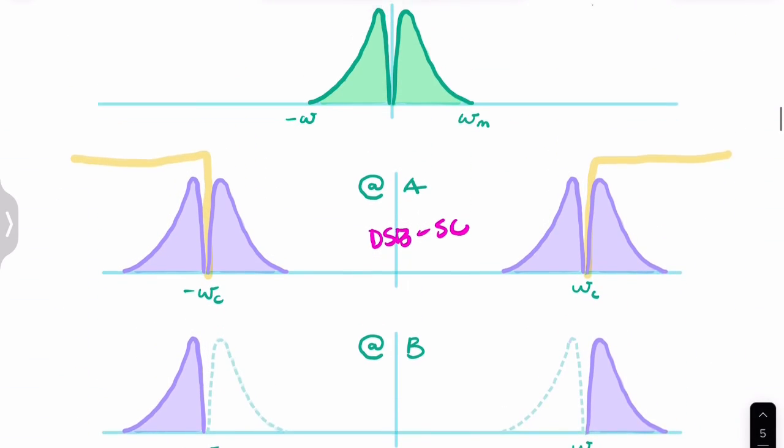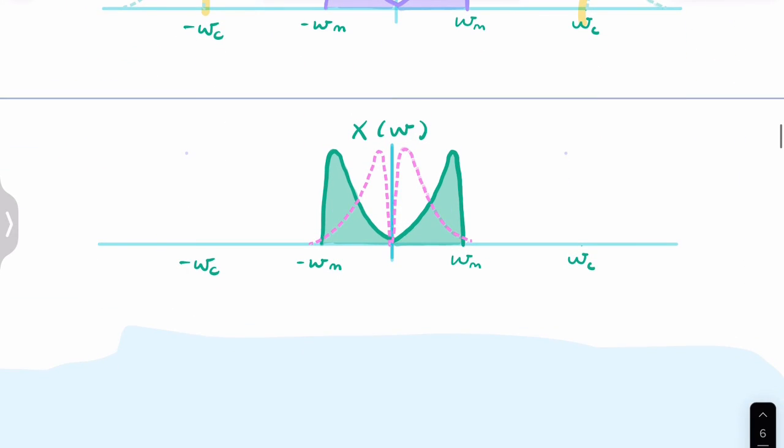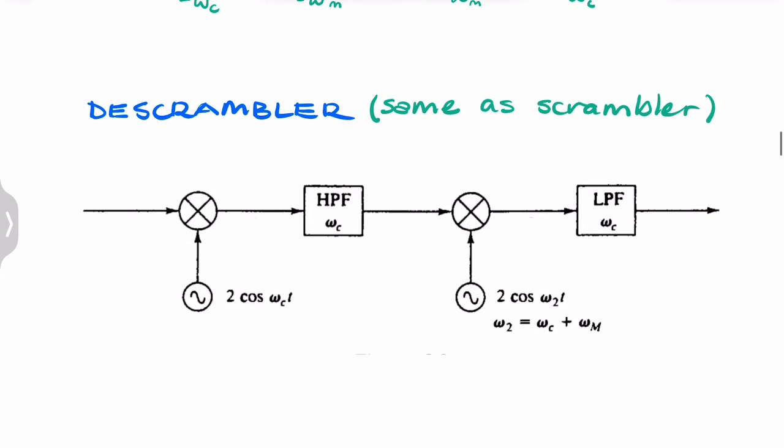Now the question was asking to design a descrambler. How do I recover my original message from this? What you need to do is reverse this again. To reverse the spectrum again, you need a circuit very similar to the scrambler. Essentially you need another scrambler. The descrambler is essentially the same as the scrambler because it does the same thing.